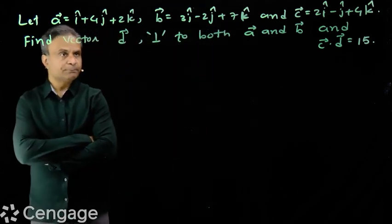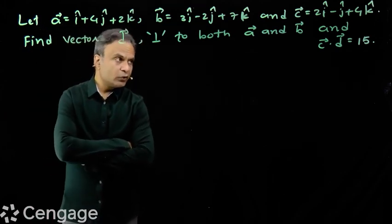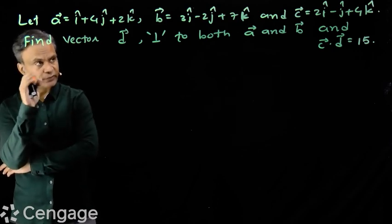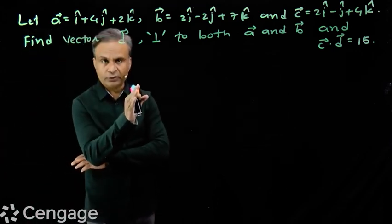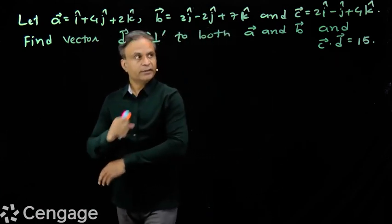Now we are going to find vector d which is perpendicular to vectors a and b, and which is such that c dot d is equal to 15. We have to find vector d which is perpendicular to vectors a and b, and c dot d is 15. What will we do?